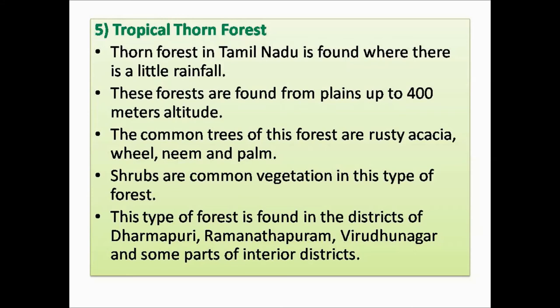Tropical Thorn Forests in Tamil Nadu are found where there is very little rainfall, from the plains up to 400 meters in altitude. Common trees include Rusty Acacia, Neem, and Palm. The tree called Karuvela Maram is found here and is known as the curse of Tamil Nadu because it makes the region dry. Its roots grow long and deep into the soil, absorbing surface water.